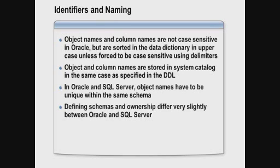Let's start by looking at the rules for identifiers and naming guidelines for SQL Server. In Oracle, object names are generally not case sensitive — they can be made case sensitive using delimiters, but by default are stored in the system catalog in upper case. In SQL Server, the casing of object names is preserved, but the default behavior is that objects are not case sensitive. In both Oracle and SQL Server, names have to be unique within a schema, so you can have two objects named the same, such as 'orders', as long as they belong to two different schemas.